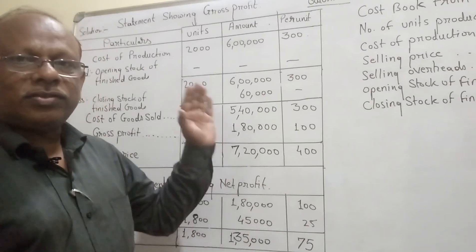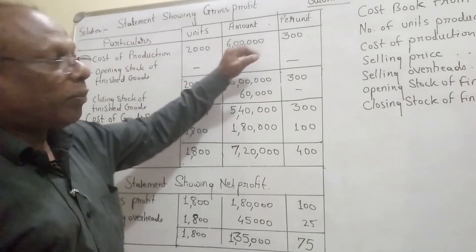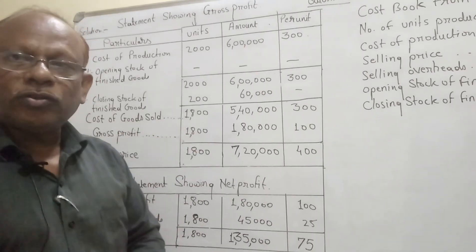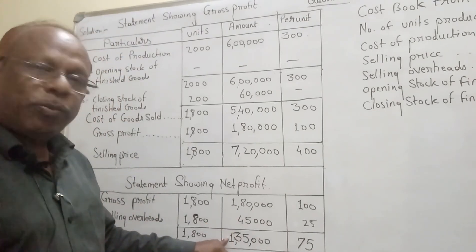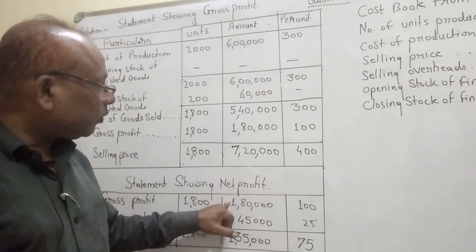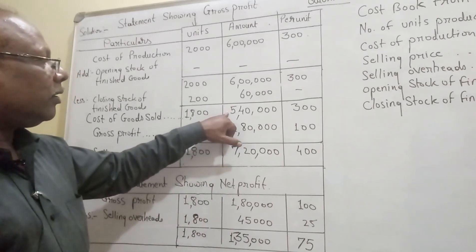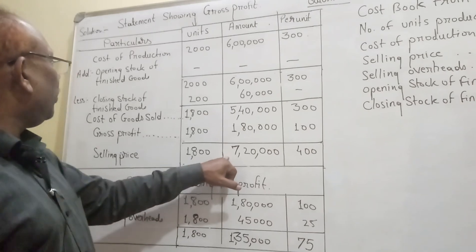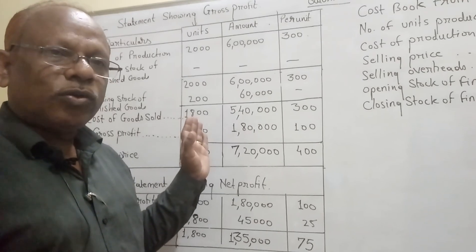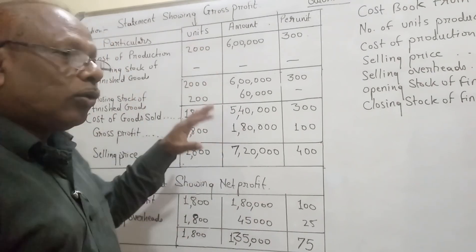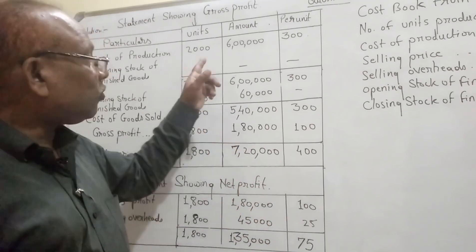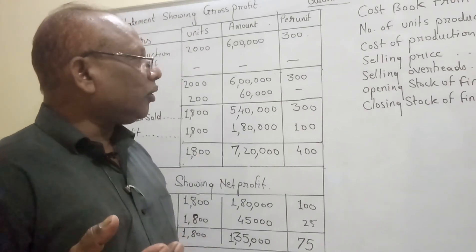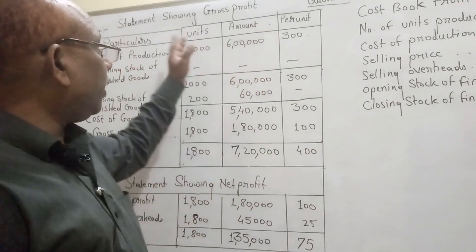If we go in reverse — if the cost of production is not given but net profit, gross profit, and cost of goods sold are given — then by adding selling and distribution expenses to net profit you get gross profit, and by adding COGS to gross profit you get sales. Going reverse, you add closing stock of finished goods and subtract opening stock of finished goods to get the cost of production. I will explain this reverse condition in upcoming videos.